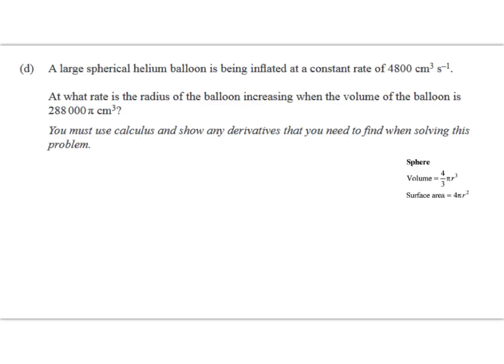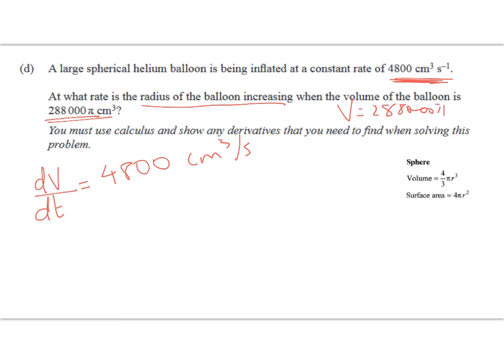Here's the merit question. We've got a large spherical helium balloon being inflated at a constant rate. We can see straight away that's going to be dv by dt. So that's equal to 4800 cubic centimeters per second. At what rate is the radius of the balloon increasing? That's what we're trying to find. When the volume of the balloon is 288,000 pi cubic centimeters, we're looking for dr by dt.